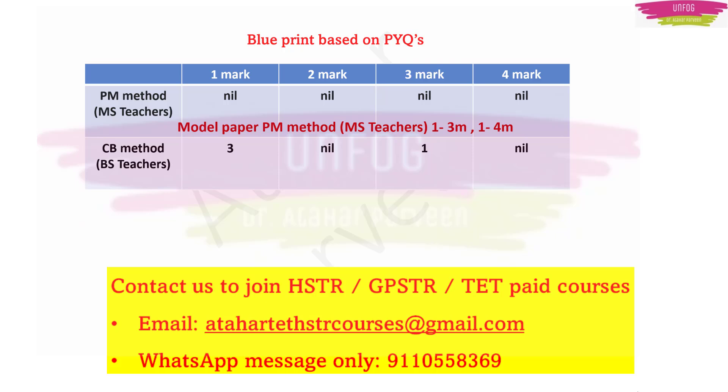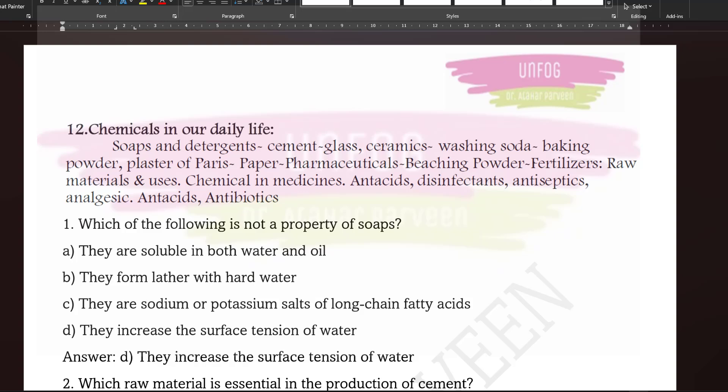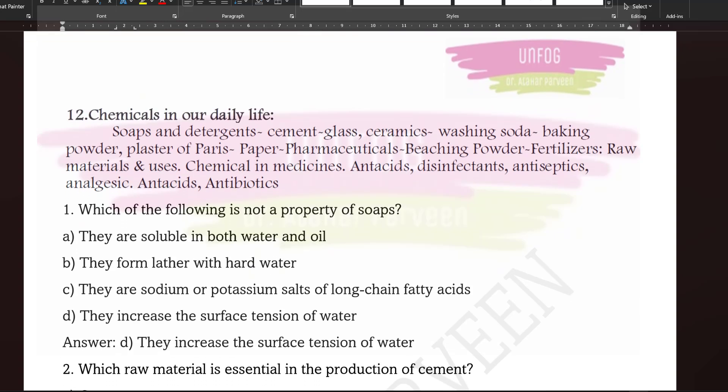This is how you have to prepare for each chapter — by considering how many questions will be asked. We discuss this type of blueprint after each chapter; the last class of every chapter always ends with this blueprint discussion for GPSTR. After this, let us look at our practice worksheet. The syllabus as per the GPSTR 2022 notification for Chemicals in Our Daily Life is written first, followed by MCQs.